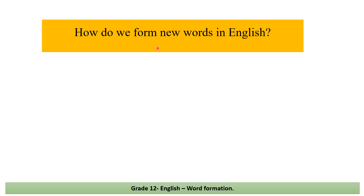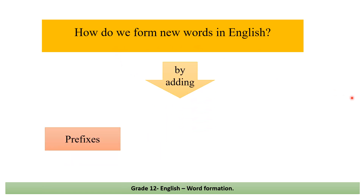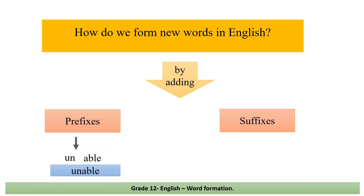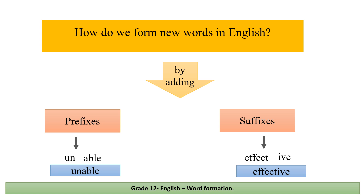How do we form new words in English? By adding either prefixes — for example, 'able': we add the prefix 'un' and it will be 'unable' — or suffixes — for example, 'effect': we add the suffix '-ive' and it will be 'effective'.